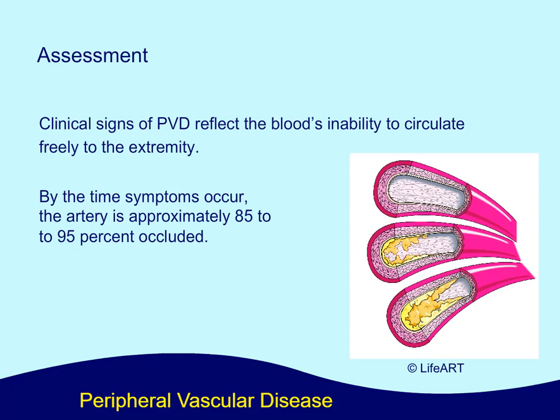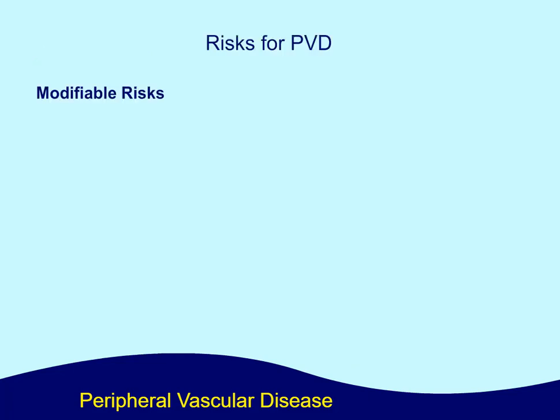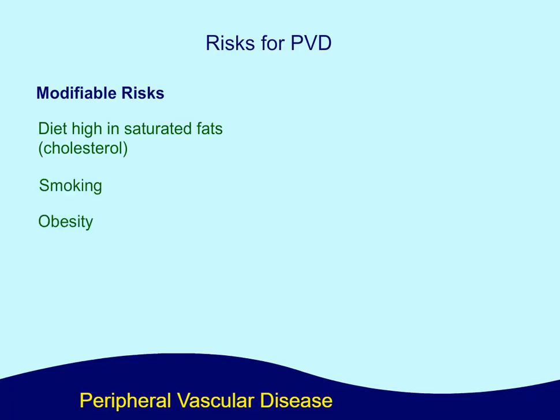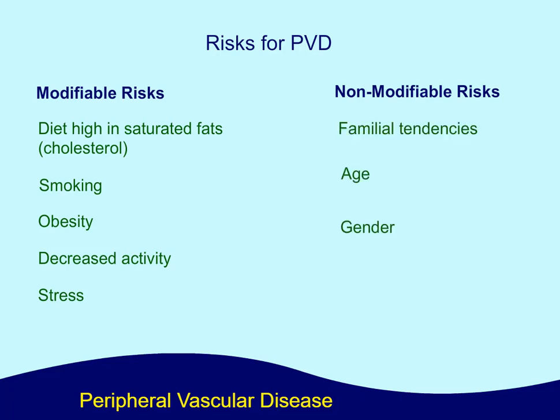Clinical signs of PVD reflect the blood's inability to circulate freely to the extremity. By the time symptoms occur, the artery is approximately 85 to 95 percent occluded. Risks for PVD include modifiable risks like a diet high in saturated fats or cholesterol, smoking, obesity, decreased activity, and stress. Non-modifiable risks include familial tendencies, age, and gender.